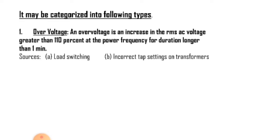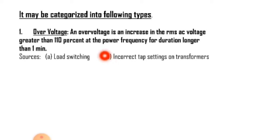Long duration voltage variations can be either over voltages or under voltages. Regarding over voltages, it is an increase in the RMS AC voltage greater than 110 percent at the power frequency for a duration longer than one minute. Over voltages are usually the result of load switching — that is switching of large loads or energizing capacitor banks. They result because either the system is too weak for the desired voltage regulation or voltage controls are inadequate. Incorrect tap settings on transformers can also result in system over voltages.